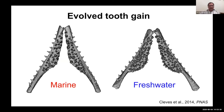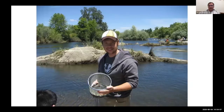Here you're looking at the lower or ventral pharyngeal jaw of adult stickleback fish caught in the wild — either in the ocean on the left or a freshwater lake on the right. We had observed that wild fish differed in tooth number, but really didn't know anything about the underlying developmental or genetic basis. Our questions included: how does this phenotypic difference arise during development, what is the genetic basis, and what specific mutations are responsible for this increase in tooth number?